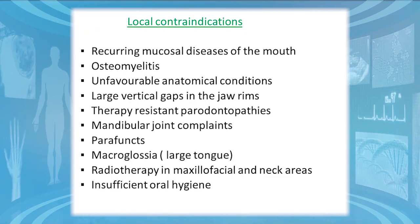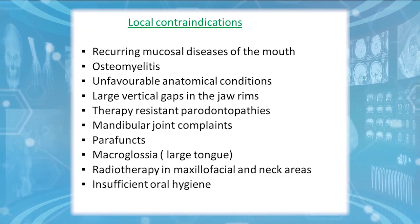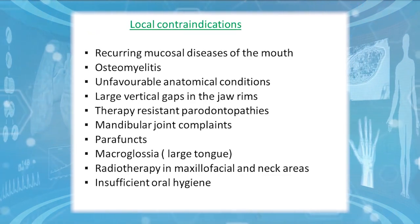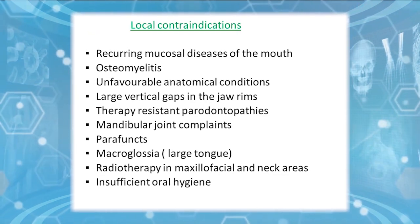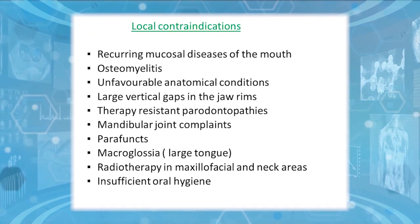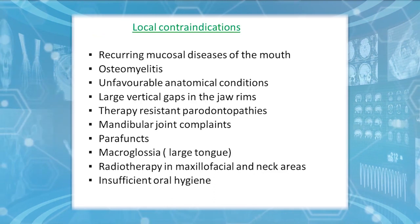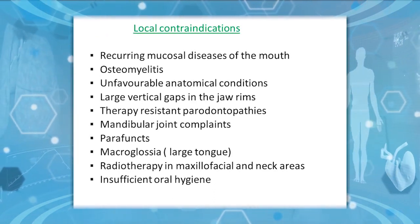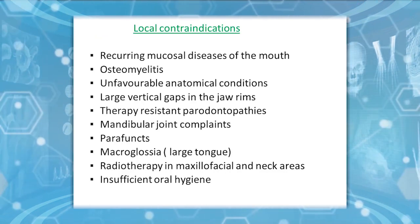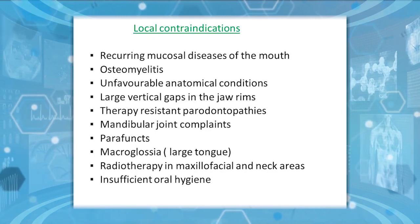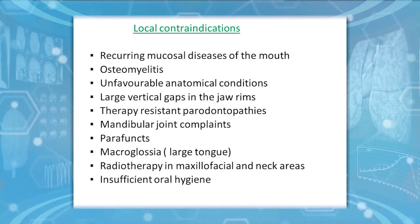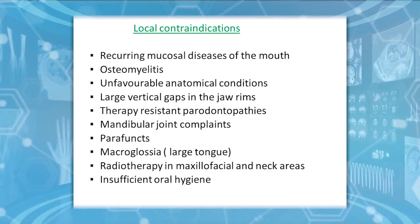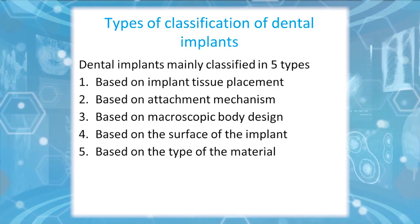Local contraindications include: ulcerating mucosal diseases of the mouth, osteomyelitis, unfavorable anatomical conditions, large vertical gaps in the jaw rims, therapy-resistant periodontopathies, mandibular joint complex issues, macroglossia (large tongue), and radiotherapy in the head and neck area — as this may cause bone necrosis. Insufficient oral hygiene is also a local contraindication to dental implant placement.